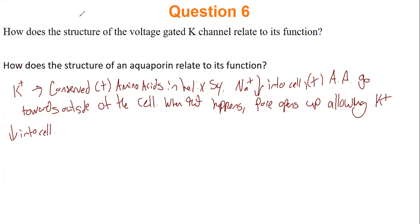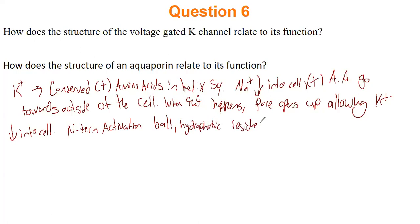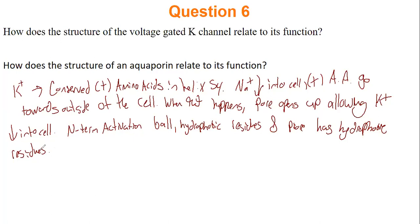There's another part — the N-terminal inactivation ball. This ball has hydrophobic residues, and the pore has hydrophobic residues as well. So when the pore opens, this ball unfolds and the hydrophobic residues of the ball and the pore interact, closing the pore and not allowing too much potassium to escape.